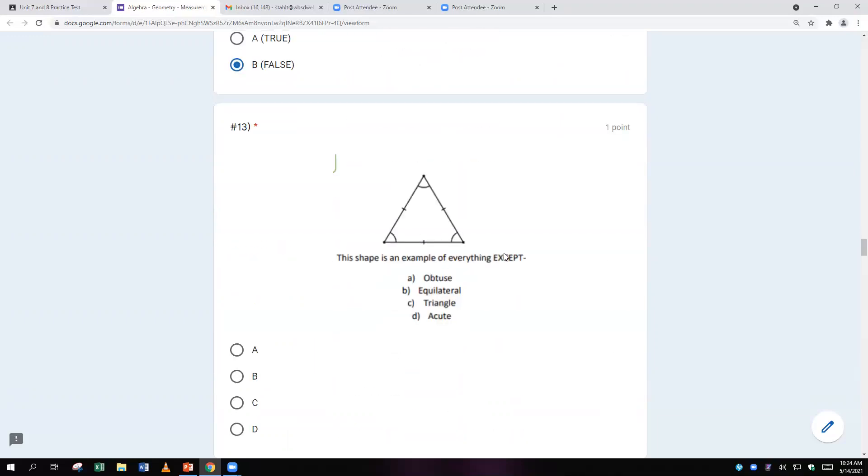This shape is an example of everything but what? Is it obtuse? Well, obtuse means it has one angle bigger than 90 degrees. And some of you guys still get kind of confused with what 90 degrees is. Let's see if I can show you. 90 degrees. Let's see. 90 degrees is exactly that. How do I know that's 90 degrees? Well, I know that's 90 degrees because I could put a little tiny box in the bottom. Therefore, it's 90 degrees. And then obtuse is bigger than 90 degrees. This is smaller than 90 degrees. This is smaller than 90 degrees. This is smaller than 90 degrees. So therefore, it is an acute triangle. It's a triangle. It's acute. And it's equilateral because all the sides are equal. So the only one it's not is obtuse.